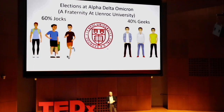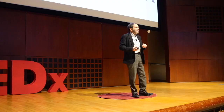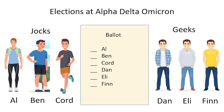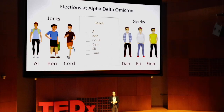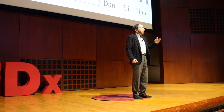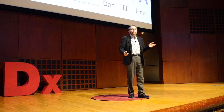The jocks make up 60% of the fraternity members, and the geeks make up 40%, and we'll assume that each fraternity member tends to vote along their own demographic. There are three jock candidates — Al, Ben, and Cord — and three geeks — Dan, Eli, and Finn. We need to have three representatives. How can we do this in a way that's fair, and what might fair even mean?